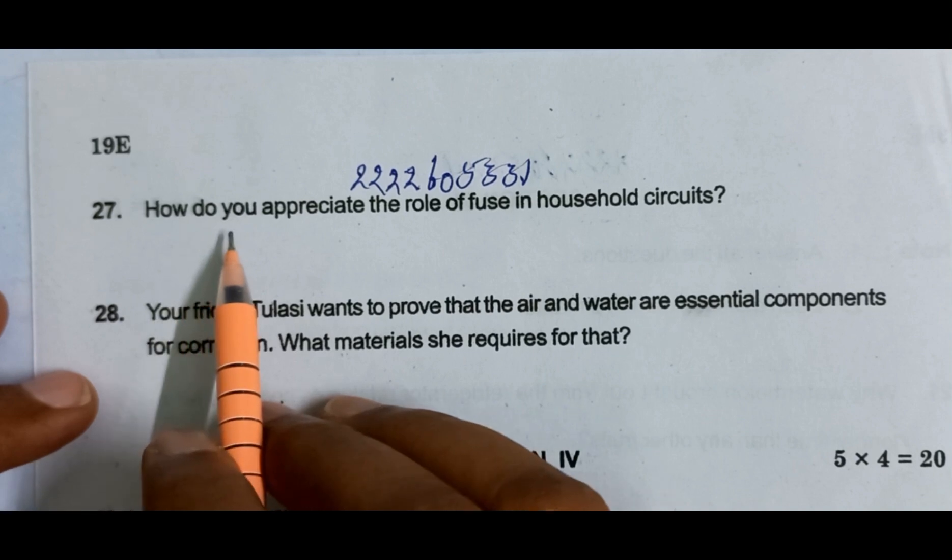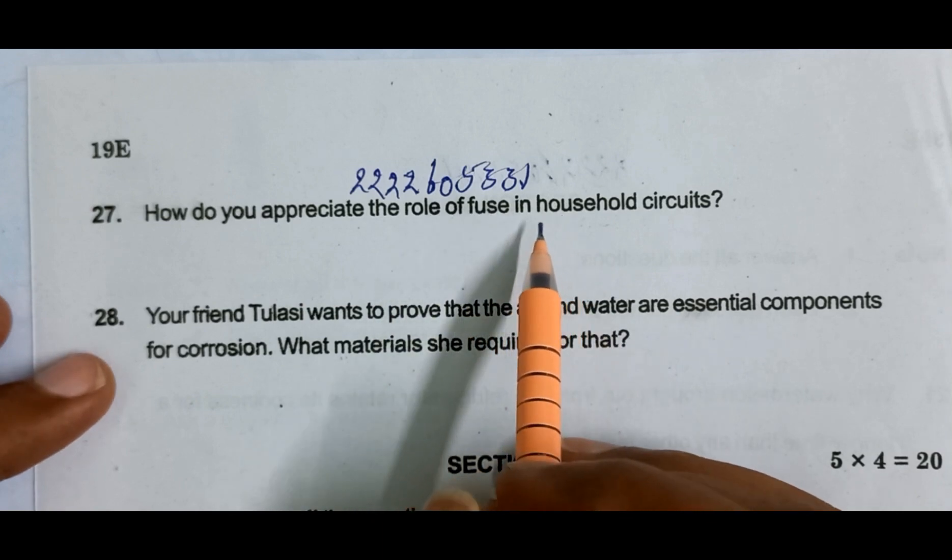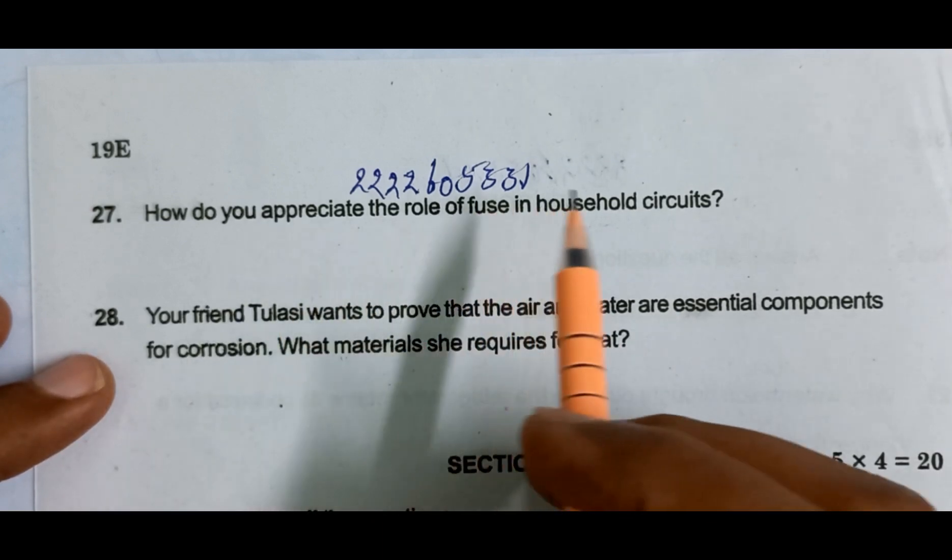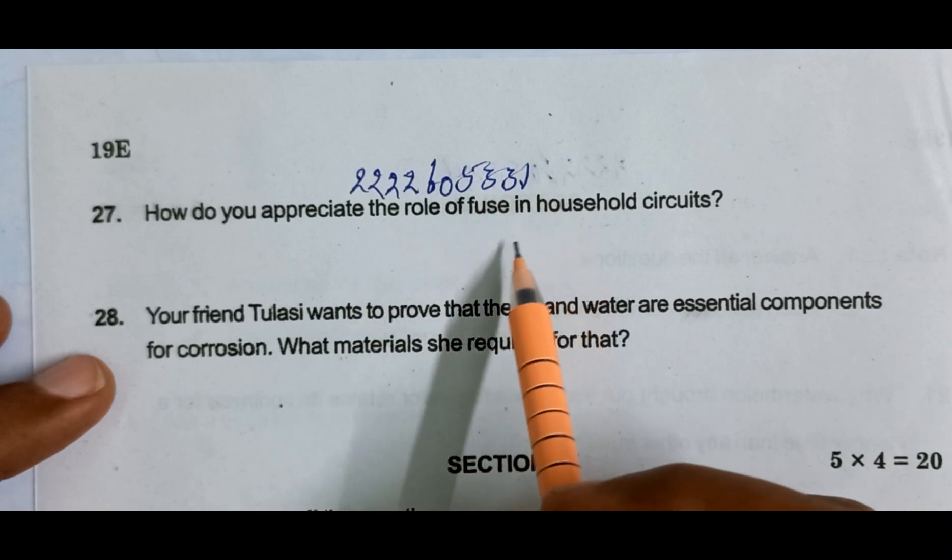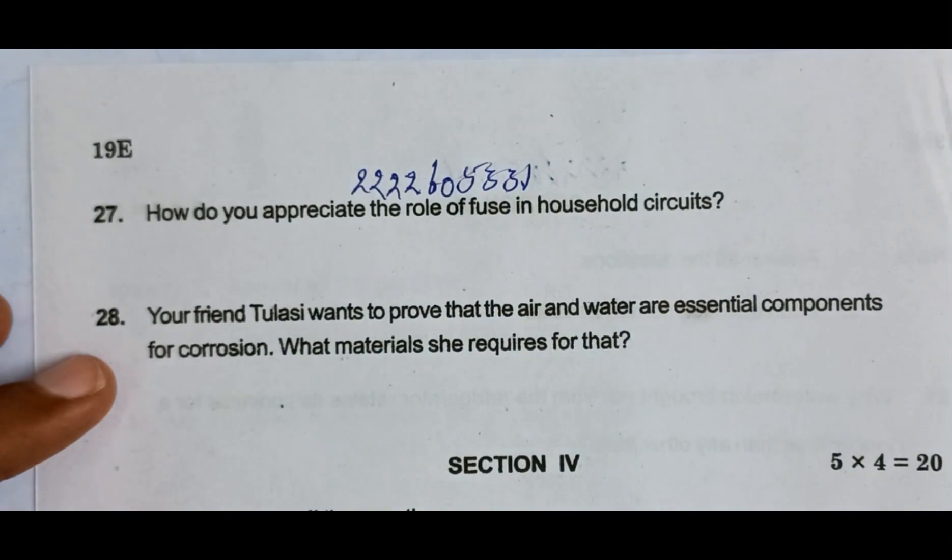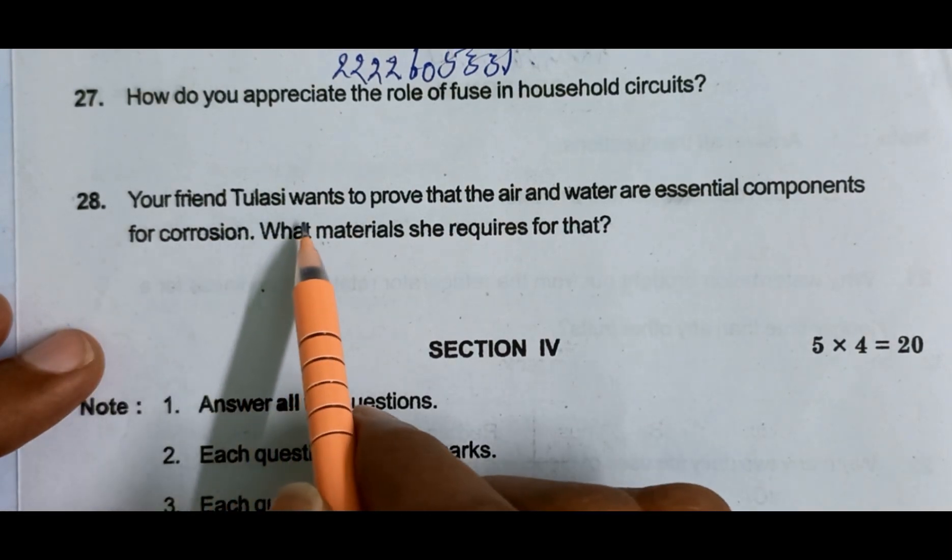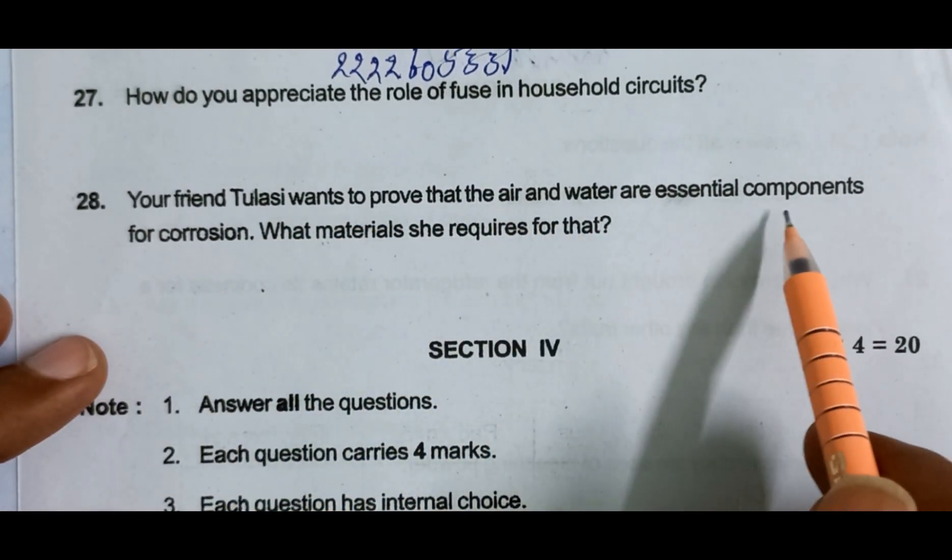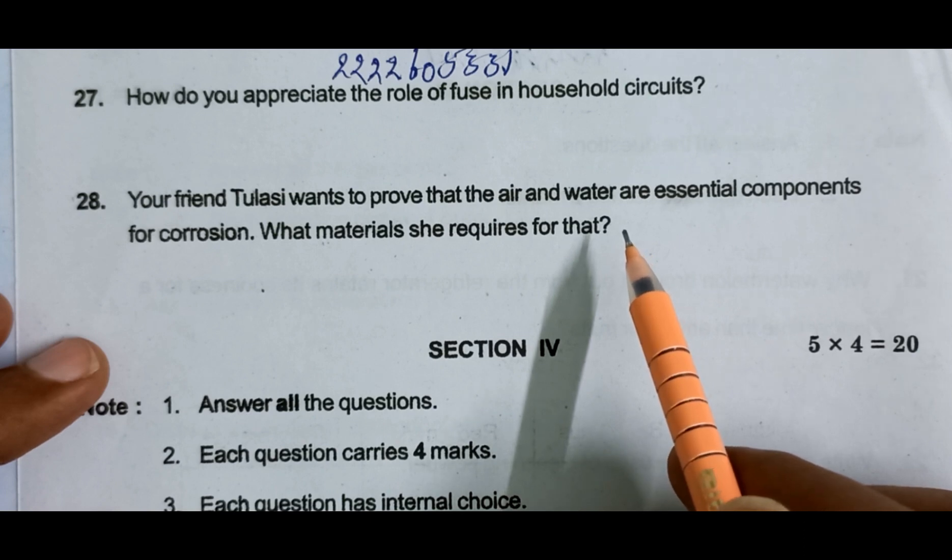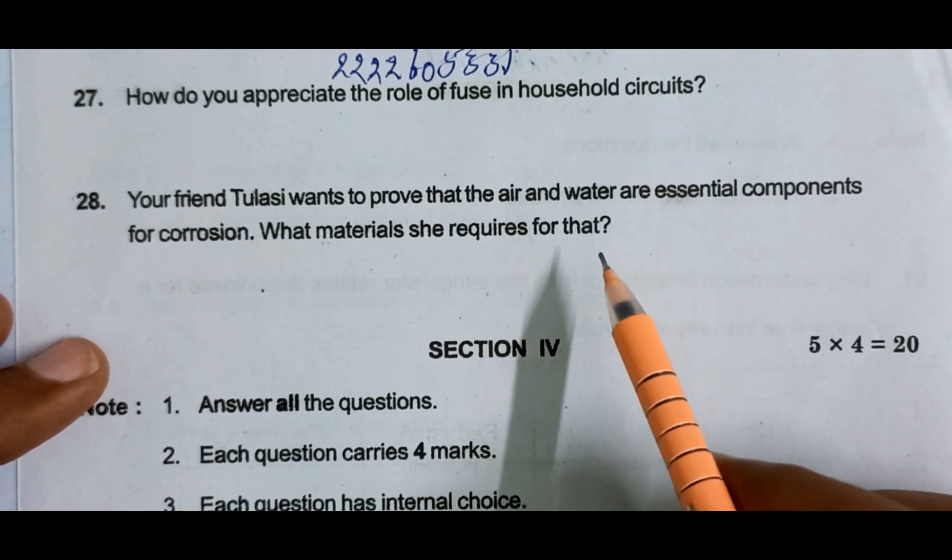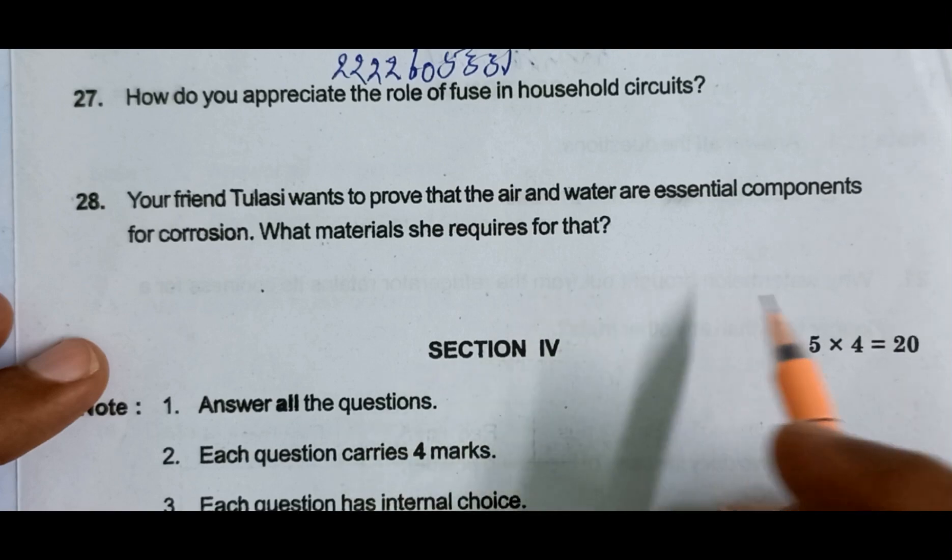Question 27, two marks: how do you appreciate the role of fuse in household circuit? Fuse plays an important role which prevents the damage caused by overloading. To prevent the damage caused by overloading, we use a fuse. Your friend Tulasi wants to prove that air and water are essential components for corrosion. What materials she required? Test tubes, bunches of iron nails, water, oil, calcium chloride - all these are required.